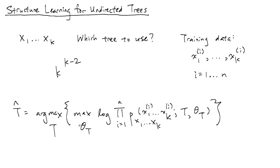What's in the curly braces is parameter estimation — we pick the best parameters for a specific tree. The argmax is only over which tree, not over which parameters. It's easy to figure out the best parameters in terms of maximum likelihood for a specific tree: once you know the tree, you just use the parameter learning approach we saw previously where we know the tree structure.